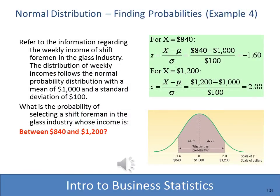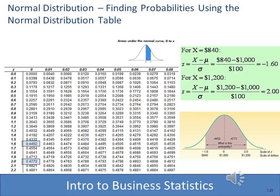Using that same foreman example, we want to find the probability of the area under the curve between 840 and 1,200. We compute two Z scores: 840 gives Z = -1.6, and 1,200 gives Z = 2.0. Looking at the bell-shaped curve, we span from -1.6 to 2.0, so we look up both Z scores and add them together, since each half of the curve is exactly 0.5.